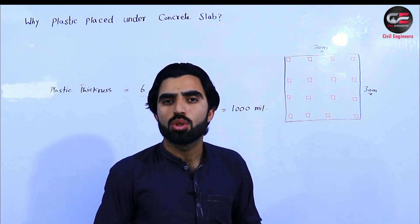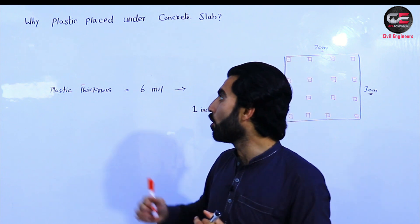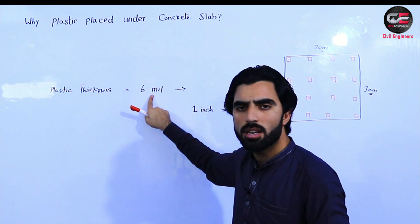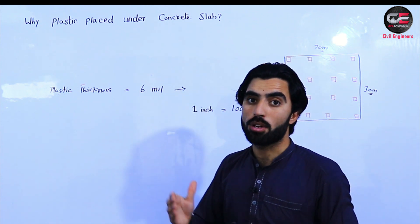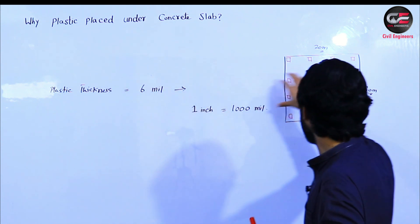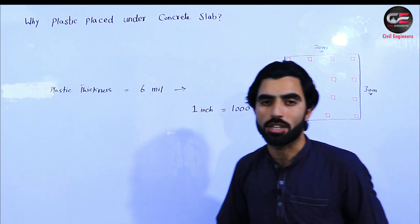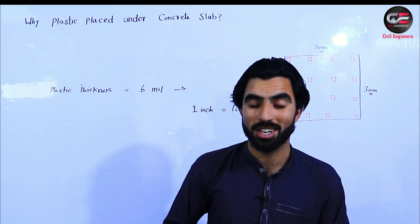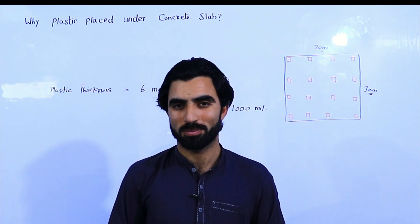If you are working near a beach, river, or any area with a high amount of moisture, plastic should be placed under the construction. The plastic thickness should not be less than 6 mil, otherwise you will face problems. Also, the beam and column — especially the beam — should be designed on the slip, because under the slip we provide the plastic. This was a very important topic. If you have any questions, please comment and I will try to reply. Thanks for watching, see you in the next video, goodbye.